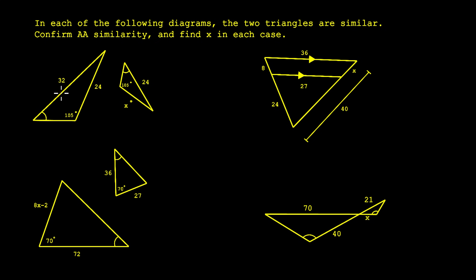Now let's go to the upper left. We have a single tick mark and a single tick mark, and then we have 105 degrees and 105 degrees here and here. So we have AA similarity.